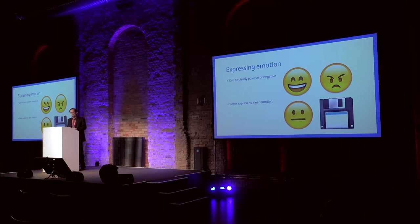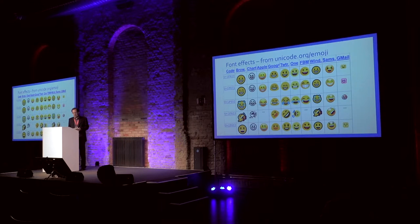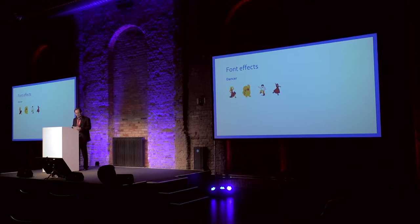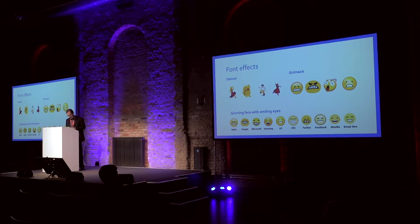A potential issue with doing this is that different companies draw emoji differently, and these even change over time. This is just the emoji chart from Unicode, and you can see different versions of some of them. Some of the more obvious differences are like the dancer — Samsung has a male dancer, Android's just a blob, and iOS has a flamenco dancer. Even a simple one like the grinning face with smiling eyes has quite a bit of variety, and this can actually affect how people perceive the emotion.